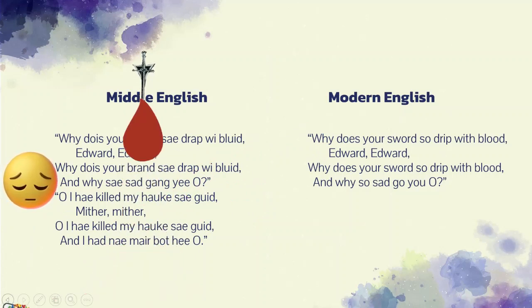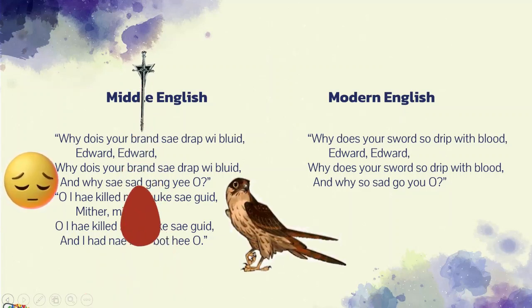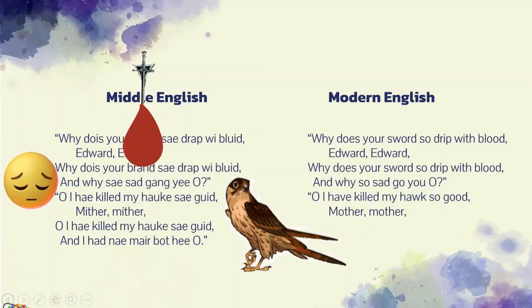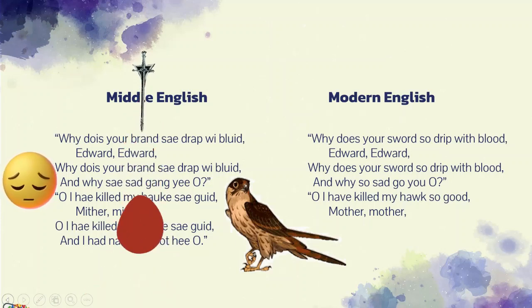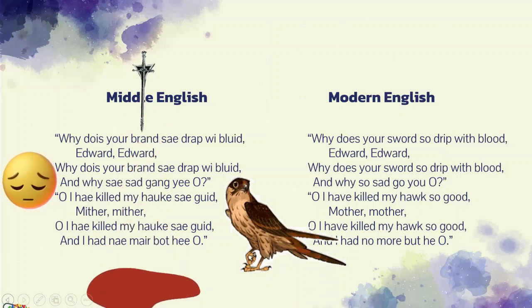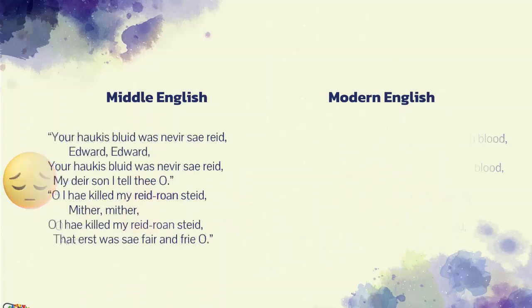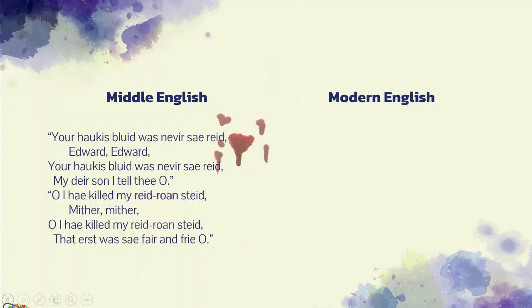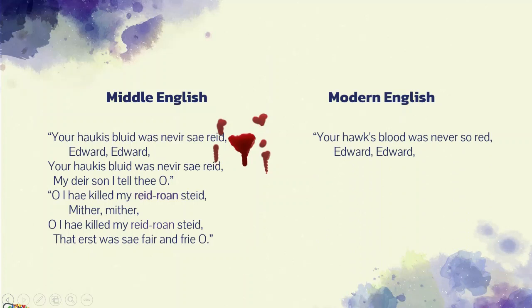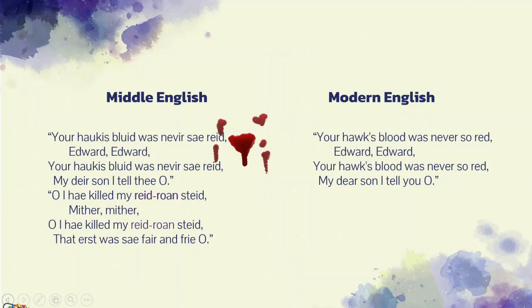'I have killed my hawk so good, mother, mother.' Edward answers that he has killed his hawk that was so good, and he has no more. So he is sorry for having killed his bird. But the mother is not satisfied and keeps asking more questions. 'Your hawk's blood was never so red, Edward, Edward.' The mother means that a hawk doesn't have so much blood, so this blood cannot belong to a small animal like a hawk. 'My dear son, I tell thee' — meaning: I know you're lying, tell the truth. So Edward is forced to give another excuse.